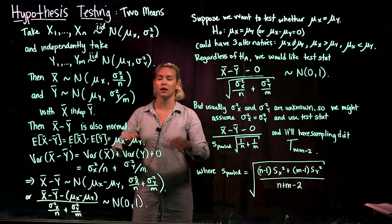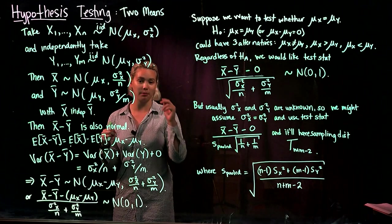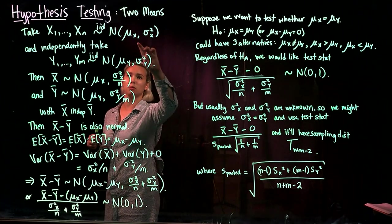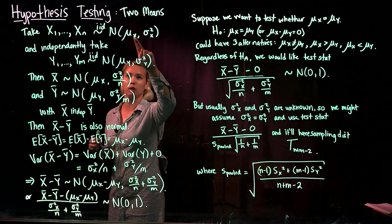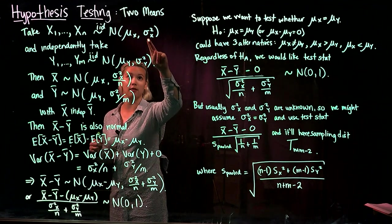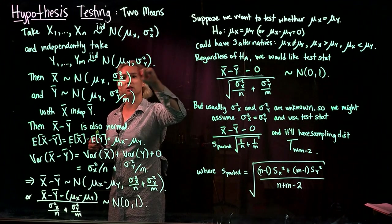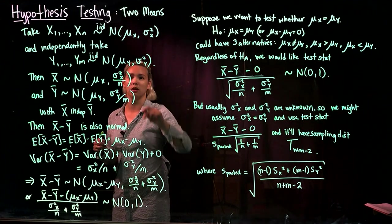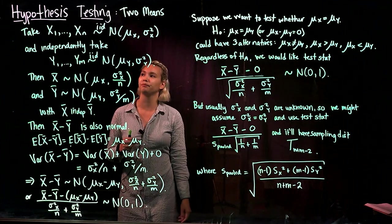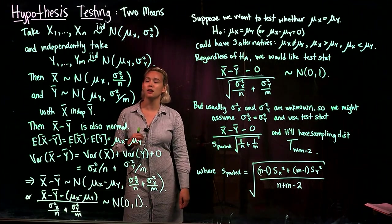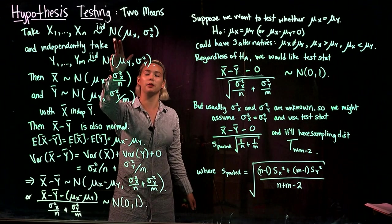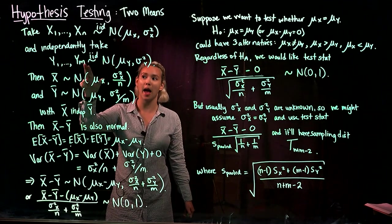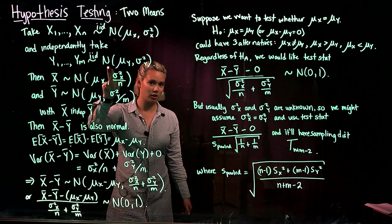If we have two means, we're going to be sampling from two distributions. Suppose we have one normal distribution with mean mu x and variance sigma squared x, and another normal distribution with mean mu y and variance sigma squared y. We take a random sample of size n from the first distribution and independently take a random sample of size m from the second distribution.